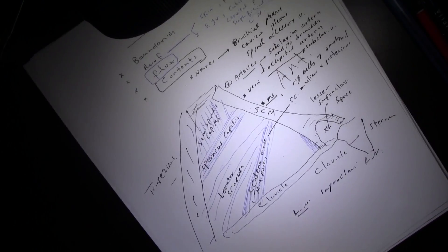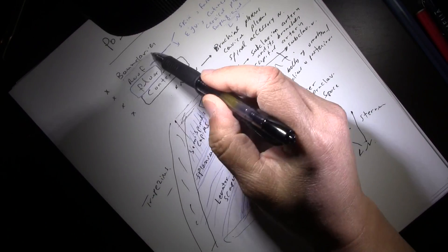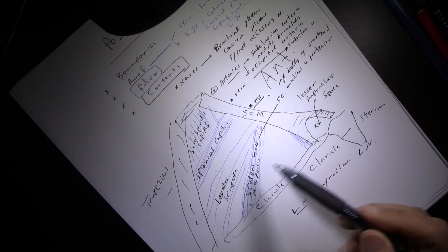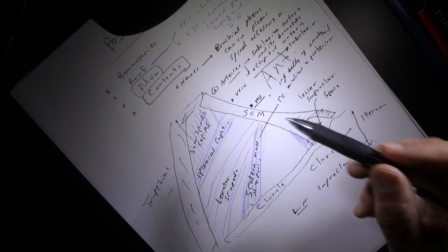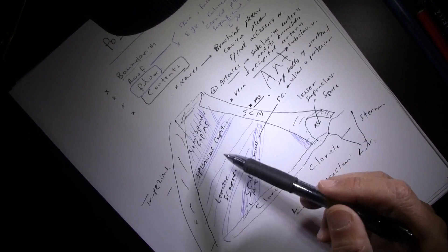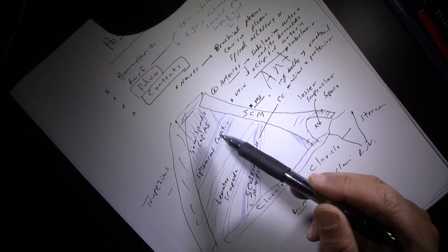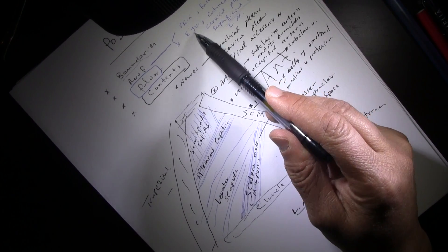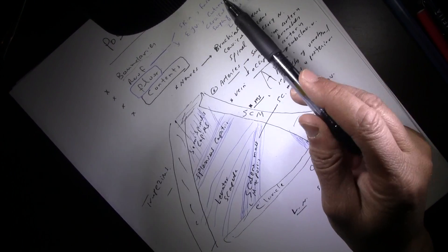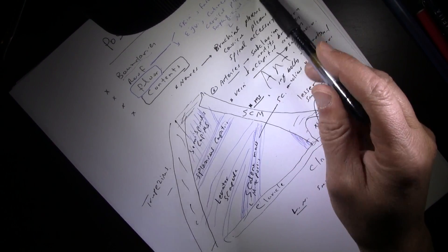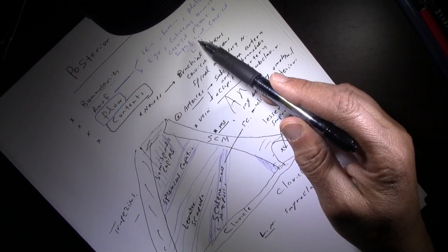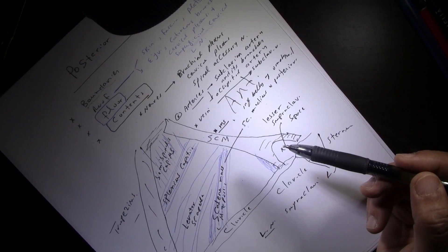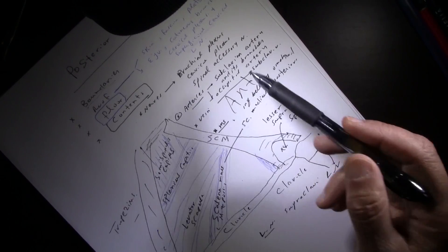To summarize the posterior triangle: boundaries are anteriorly the sternocleidomastoid, posteriorly the trapezius, and the base is the middle third of the clavicle. The roof consists of skin, fascia, and platysma, within which you see the external jugular vein and cutaneous branches of the cervical plexus — including the lesser occipital nerve and the supraclavicular nerve.